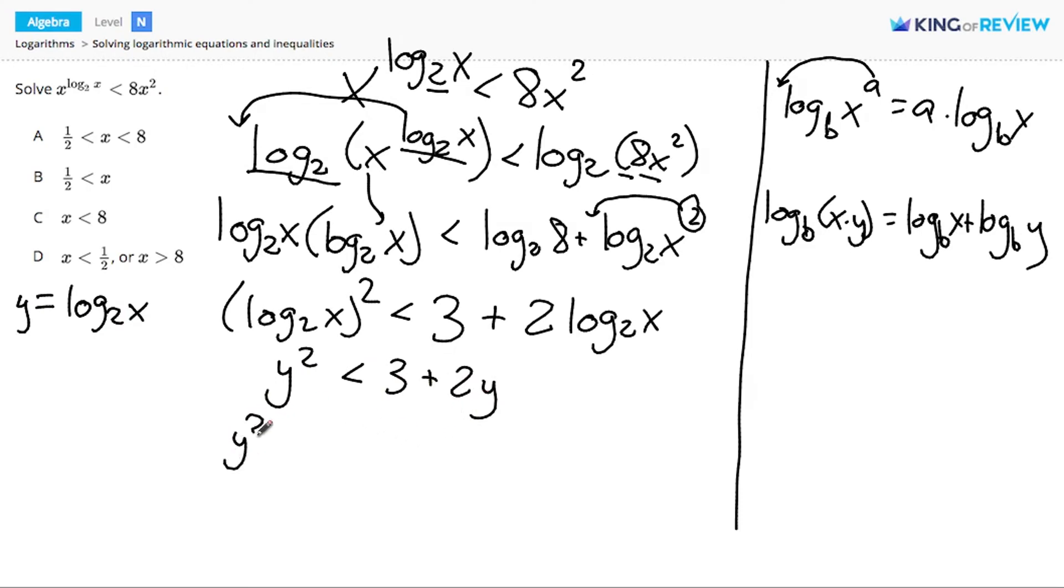If I move all the variables to the left side, I get y squared minus 2y minus 3 is less than 0, and this is an easily factorable problem. I know that y times y is y squared. I need two numbers that multiply to negative 3 and add up to negative 2. That would be negative 3 and 1.